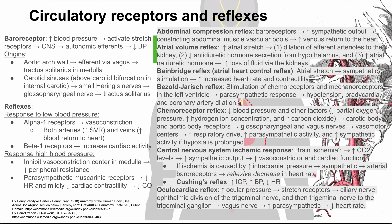Next is the oculocardiac reflex. This is increased ocular pressure, which stretches the stretch receptors inside the eye, and then through the ciliary nerve, the ophthalmic division of the trigeminal nerve, the trigeminal ganglion, and eventually the vagus nerve, increases parasympathetic stimulation and decreases your heart rate. This is important in anesthesiology for ophthalmic procedures — if a surgeon is working on the eye, you might see a drop in heart rate. That's it for circulatory receptors and reflexes.